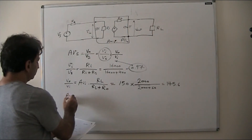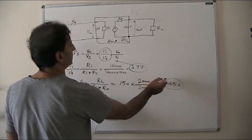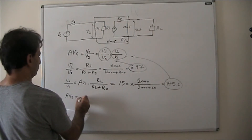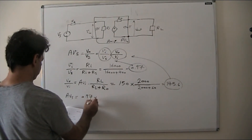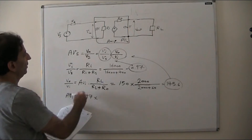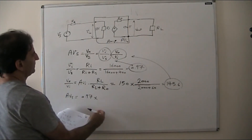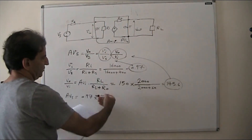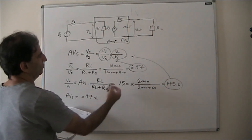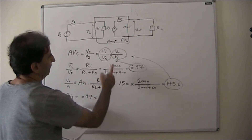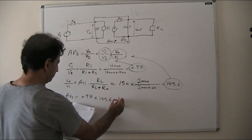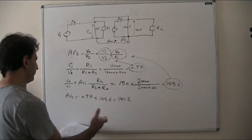So AVS = (VI/VS) × (VO/VI) = 0.97 × 145.6 = 141.2. There is no unit for that — that is your overall voltage gain. We have now found the overall voltage gain.